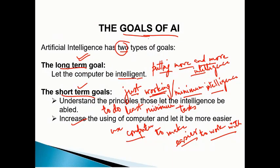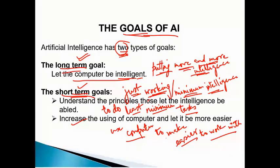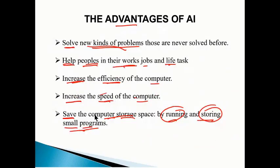There are two main goals in AI: long-term and short-term. The long-term goal is putting more and more intelligence inside machines so computers become increasingly intelligent over time. The short-term goal is working with minimum intelligence — a machine doing just one or two tasks efficiently. The overall aim is to make computers easier and smarter to work with.